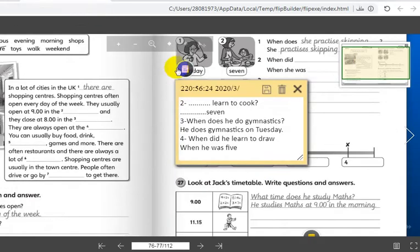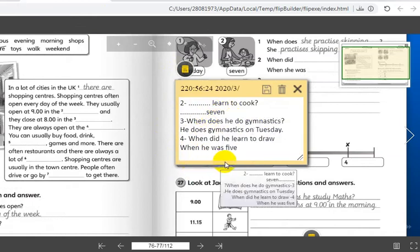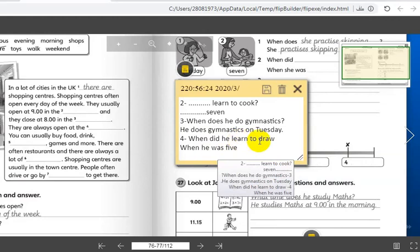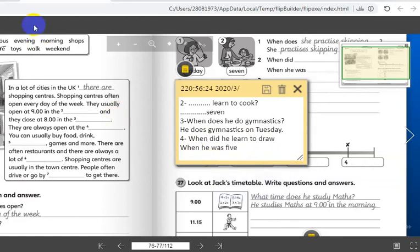I prepared an answer for you, not to waste time. Look, you can pause the video, take your time and write the answers. Here are the answers: learn to cook, seven; when does he do gymnastics, he does gymnastics on Tuesday; when did he learn to draw, when he was five. Take your time and write.